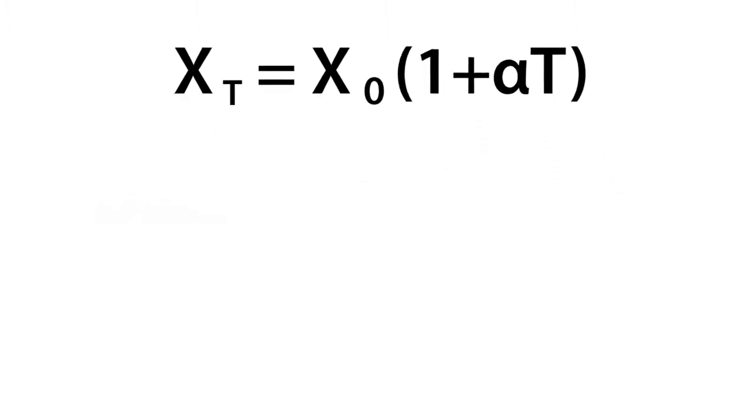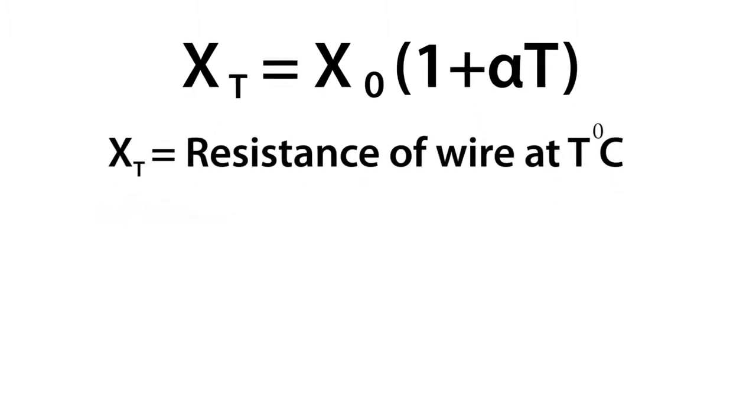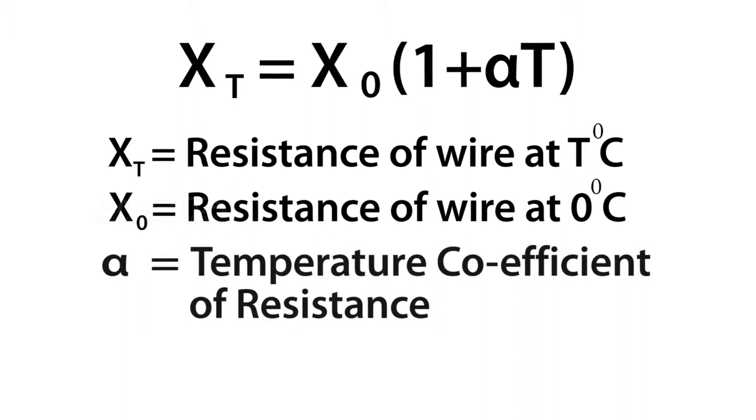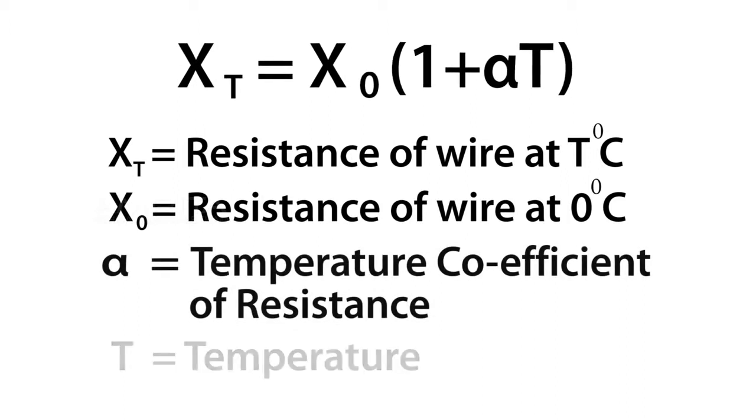Where Xt equals resistance of wire at t degrees Celsius, and X0 equals resistance of wire at 0 degrees Celsius. Alpha equals temperature coefficient of resistance, and t equals temperature.